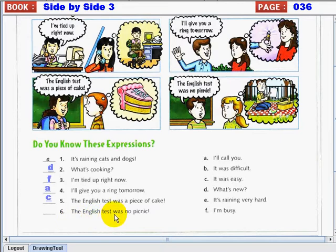And number 6. The English test was no picnic. The English test was no picnic. Of course, the answer is letter B. It was difficult. And that's a good job.